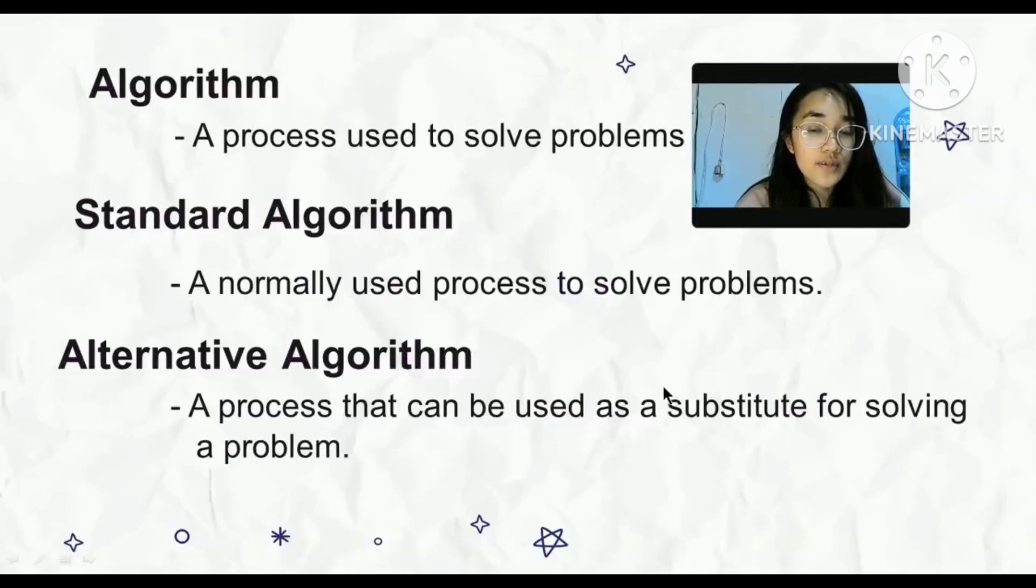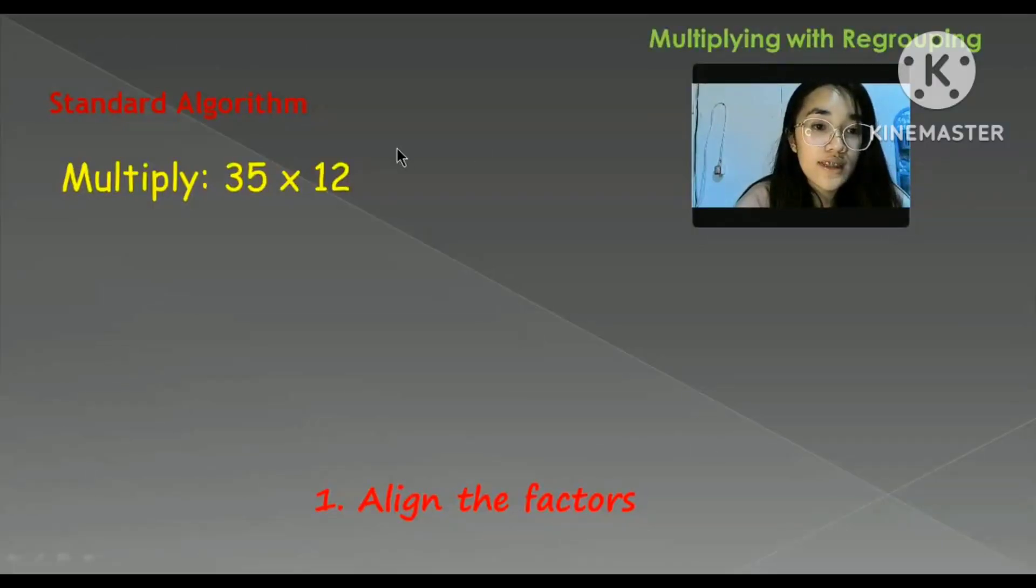So again, alternative is the substitute method that we are using. I'll be showing some examples. So this is an example of multiplying by two digit number.